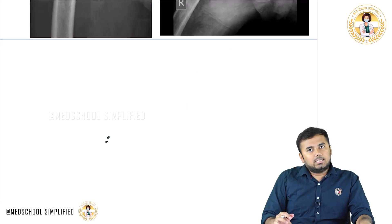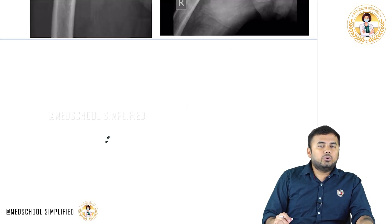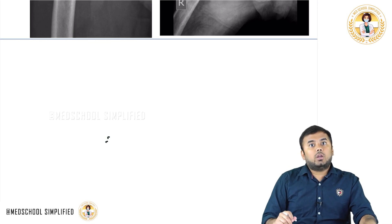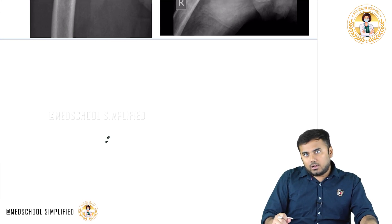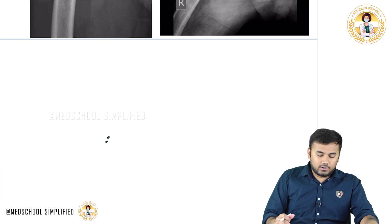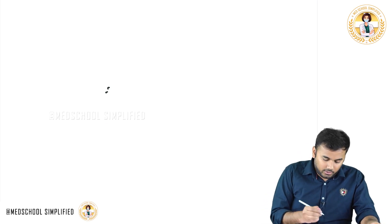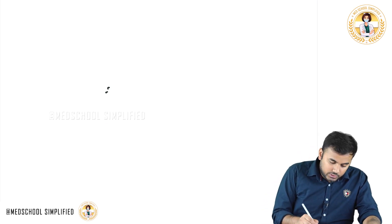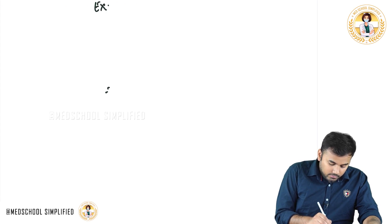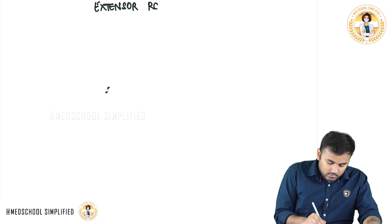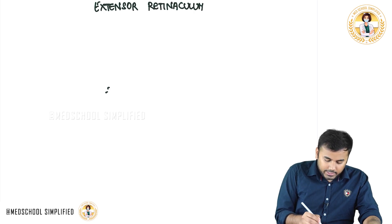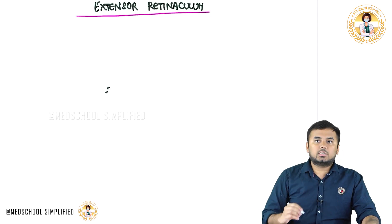We shall be discussing another important topic. In the foot region there are two retinaculums: one is called extensor retinaculum and another one is called flexor retinaculum. We shall see what are the structures of extensor as well as flexor retinaculum. First we shall discuss about extensor retinaculum and next we shall discuss about flexor retinaculum.